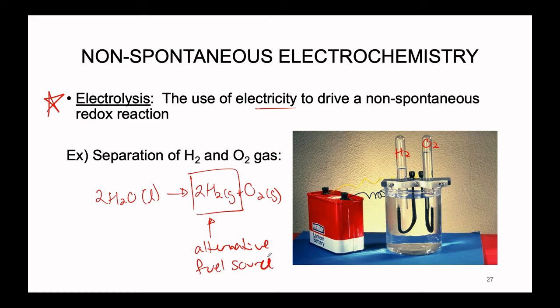This is a commonly studied non-spontaneous electrochemical reaction, and the reason it is so widely studied is specifically the generation of H₂ gas, which is being looked at as an alternative fuel source. The real problem is not how to generate H₂ — it only takes 9 volts, like a standard 9-volt battery you buy at the grocery store. The problem is storage of H₂. If we're trying to use it as a combustible fuel, storing it in a tank in a car is dangerous. Finding a way to meaningfully store H₂ is a hot-button topic in science, physics, and the engineering of alternative fuel sources.